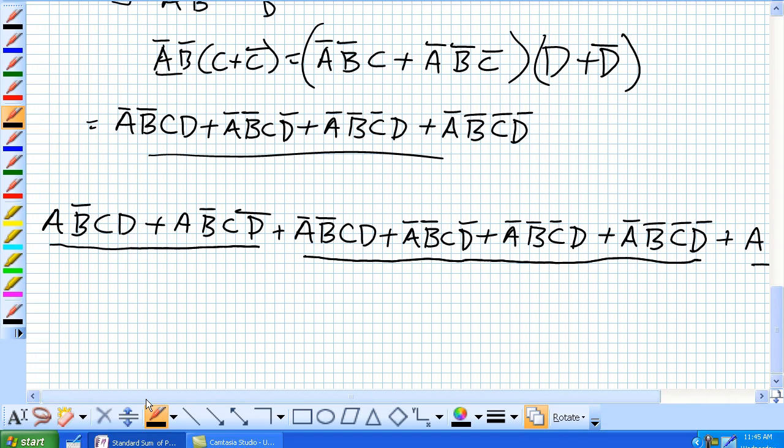So let's take this new first term. Given A, 1, B was a 0, but a not B would be 1. So 1, 0, and then a C1, D1. So 1, 1, 1, 1, that would give us a 1 right there, okay?